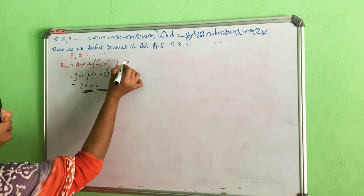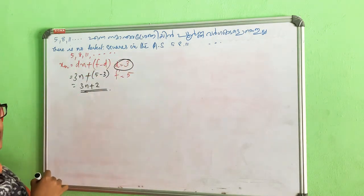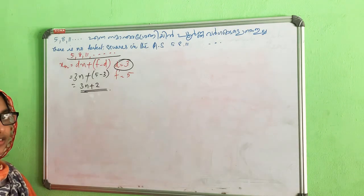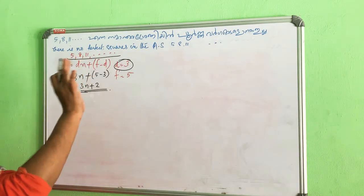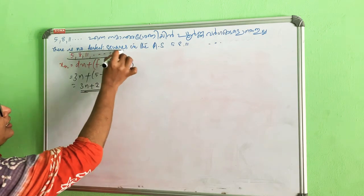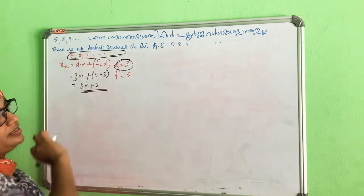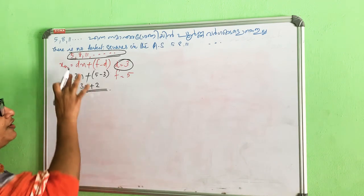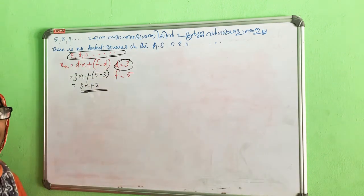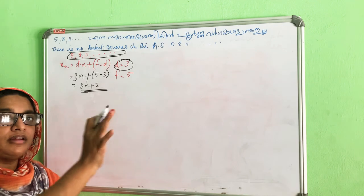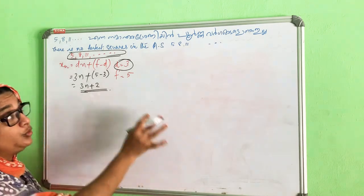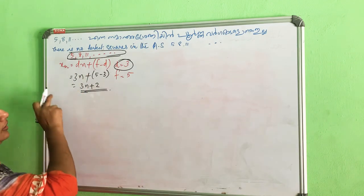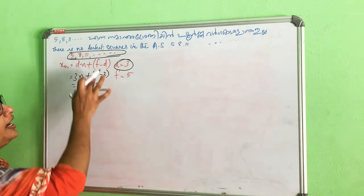There is a common difference of 3. The general term is 3n + 2. So the sequence 5, 8, 11, etc. is represented by 3n + 2. We will prove that this has no perfect square. We will prove it.